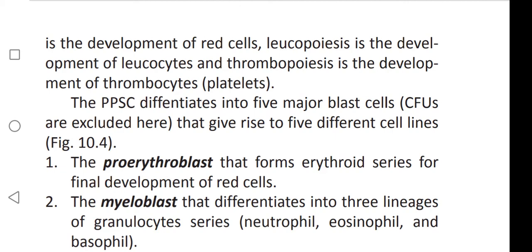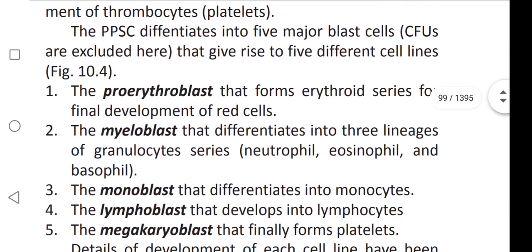The pluripotent stem cell differentiates into five major blast cells — colony forming units are excluded here — that give rise to five different cell lines. First, proerythroblast, that forms the erythroid series for the final development of red cells.